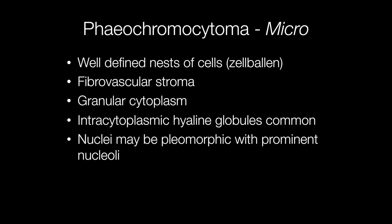Histologically, pheochromocytomas have well-defined nests of cells, sometimes referred to as zellballen. The stroma is finely fibrovascular. The cytoplasm of the pheochromocytoma cells tends to be rather granular and pale staining. Intracytoplasmic hyaline globules may be seen that are PAS positive. The nuclei may be pleomorphic with prominent nucleoli, but pleomorphism has no bearing on how a pheochromocytoma will behave.